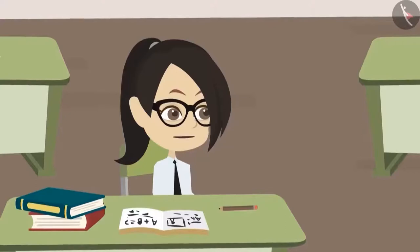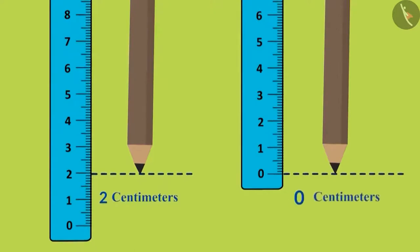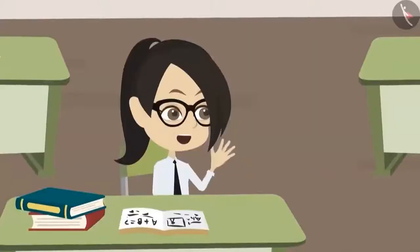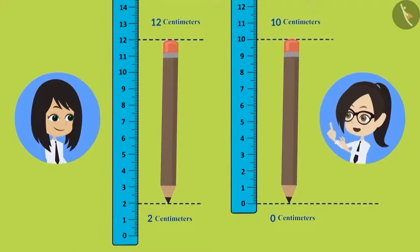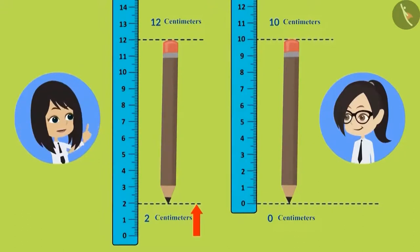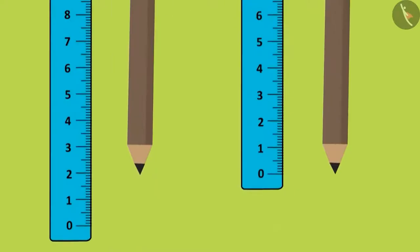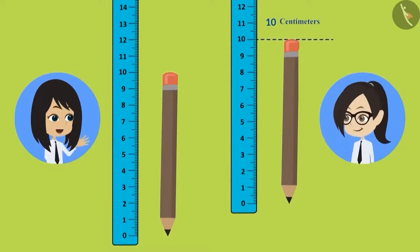Now I know why this is happening. You have placed the bottom end of your pencil at 2 centimeters, while I have placed mine at 0 centimeters. What difference does that make? It leads to incorrect measurements. To measure the correct length of objects, we should place their lower end at 0. The problem with keeping the pencil at 2 centimeters is that there is no pencil from 0 to 2 centimeters, but you included that length in the measurement. Now I'll correct it — I'll keep the pencil at 0 centimeters. My pencil is also 10 centimeters.